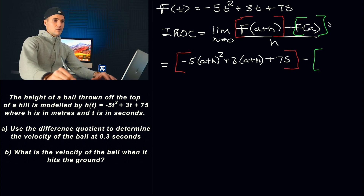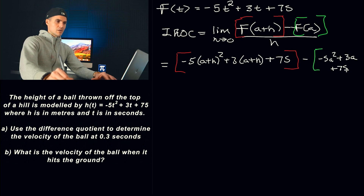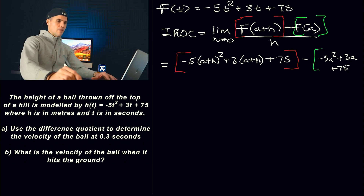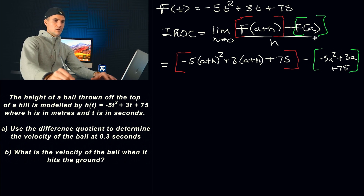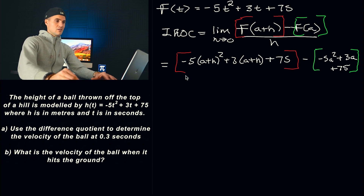F of A is just plugging in A for all the T values: negative 5A squared plus 3A plus 75. I close that off with the green bracket. So this whole thing represents F of A, and then that's all over H.